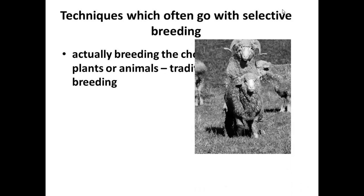There are techniques which often go with selective breeding. You can, of course, just put a male animal in a field with a female animal — this is the traditional method. This ram, with his magnificent horns and fleece, is clearly a very desirable individual from the farmer's point of view, and he will put this ram in the field to do what sheep do.